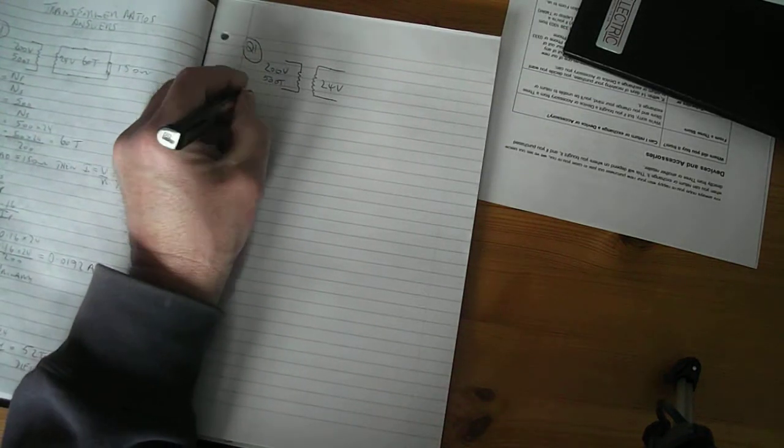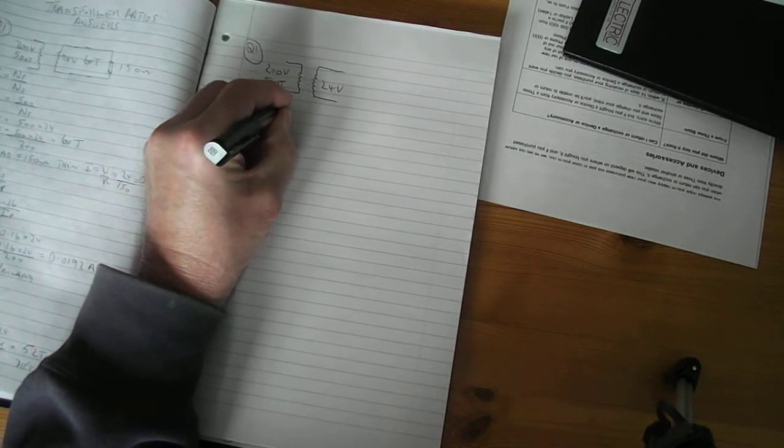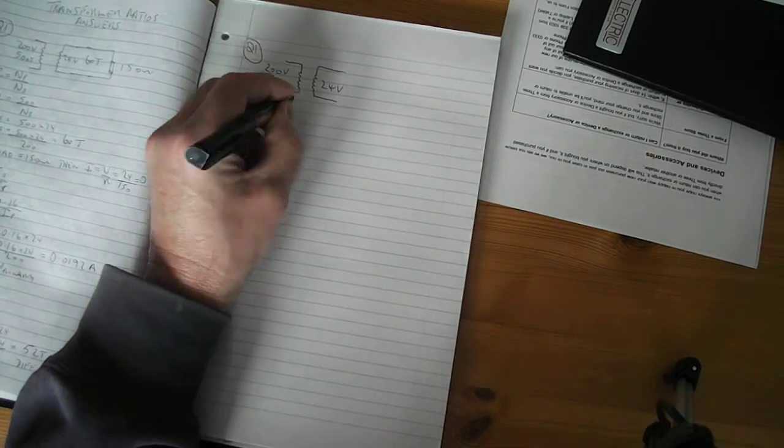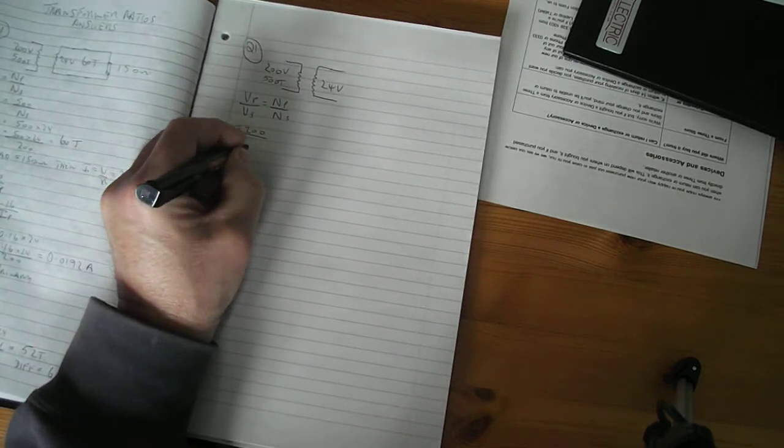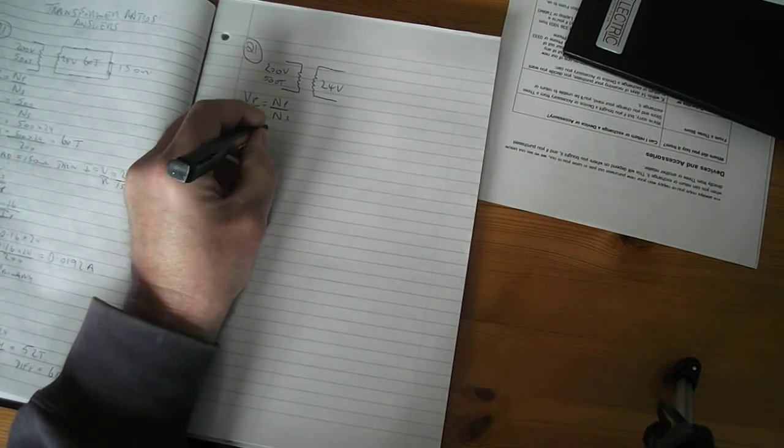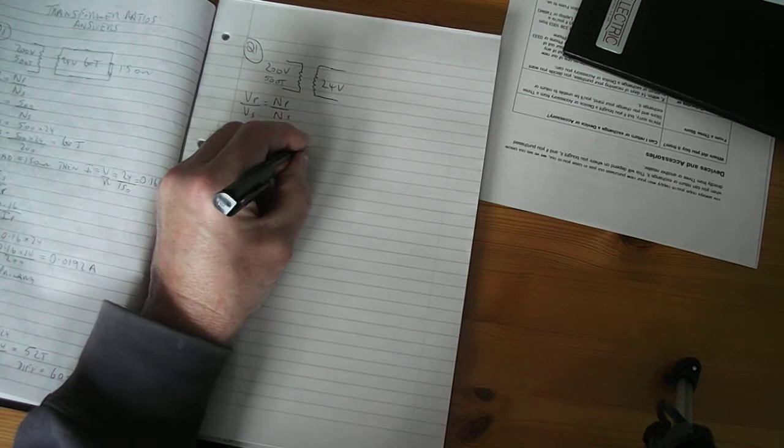So write that down. That's the formula you're going to use. V primary over V secondary equals N primary over N secondary. And that comes to 200, put the figures in, 200 divided by 24 equals 500 divided by NS.